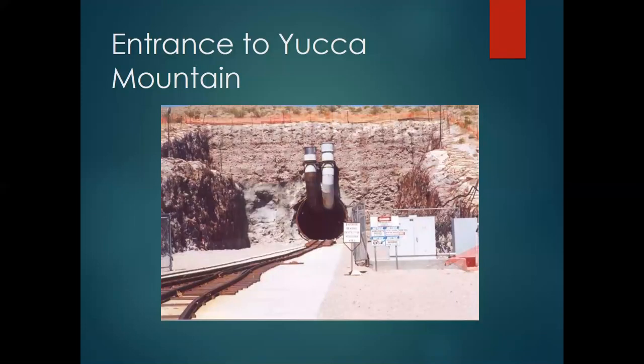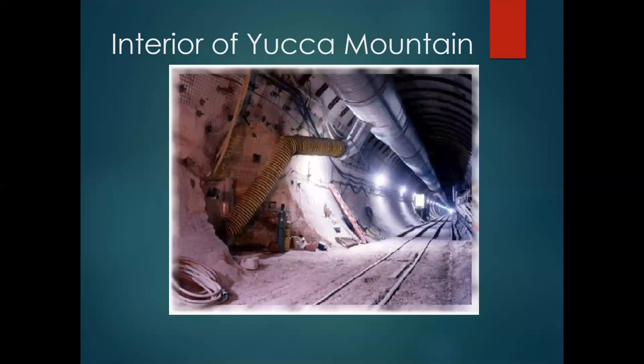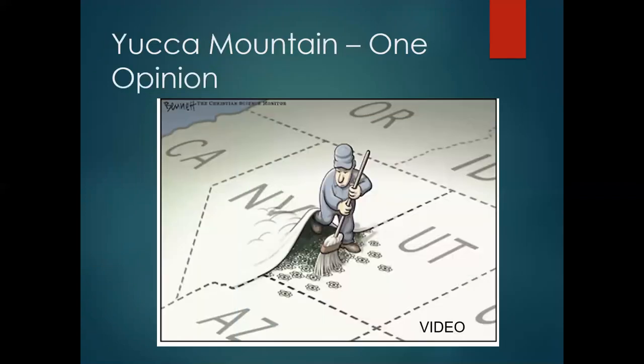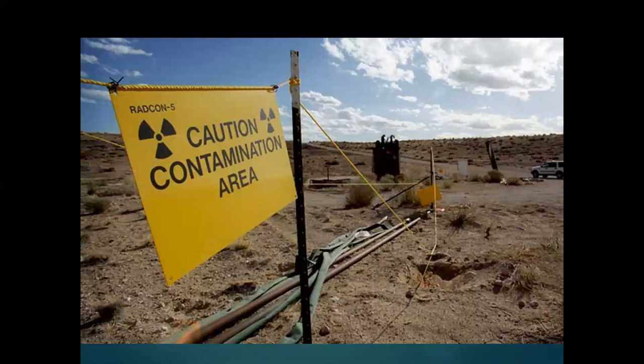Here is the entrance to Yucca Mountain and the interior, where they would send casks down on train cars. But remember, no actual transuranic waste — material that has come out of a nuclear reactor — has ever been stored here. The citizens of Nevada don't really want this material, and this is a contaminated area, so people obviously do not want this in their backyard.